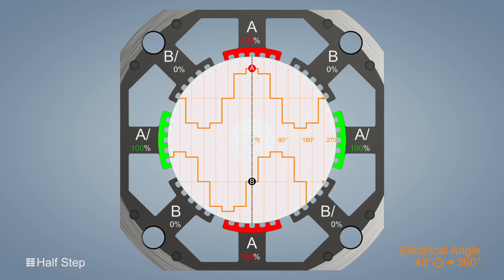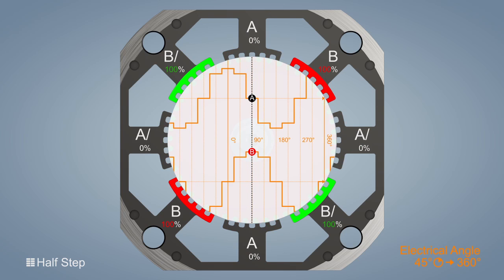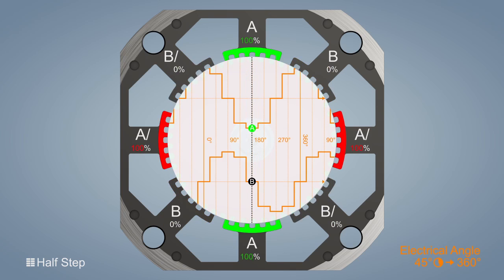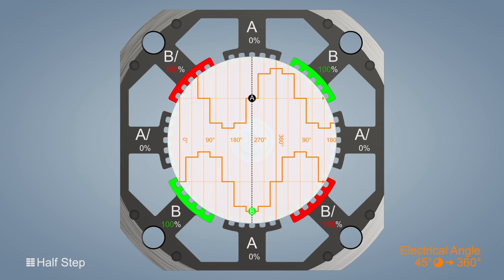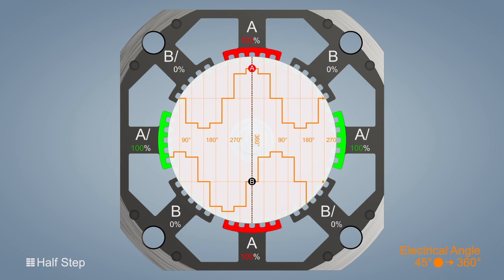Energization also follows the phase model in eight electrical steps from the initial position of 0 degrees through 45 to 360 degrees. Switching the current level from 71% to 100% and back to 71% results in a consistent current or power vector.